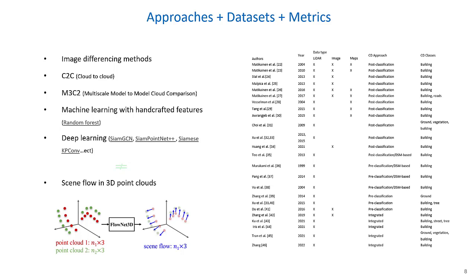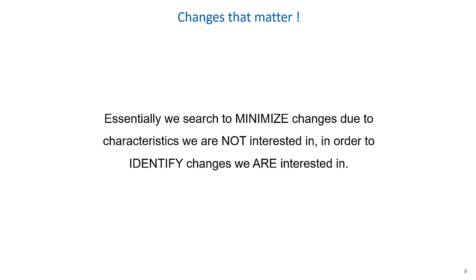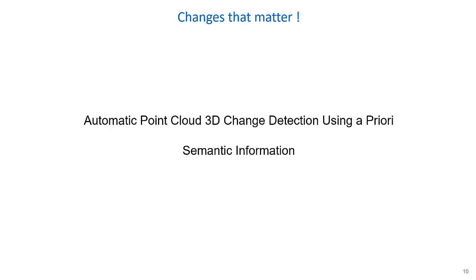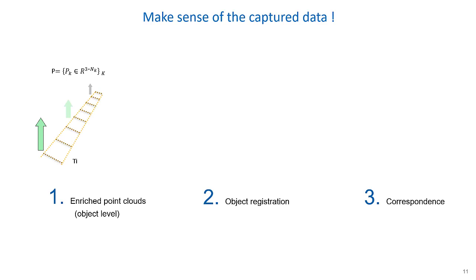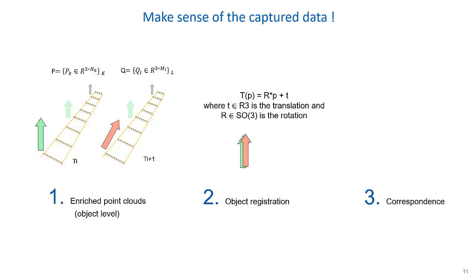A paper is coming in which I make a critical review of existing methods, existing datasets and metrics. In my PhD thesis, the major objective is to detect the change that matters. Essentially, we seek to minimize changes due to characteristics we are not interested in, in order to identify the changes we are interested in, and also by using an approach of estimating uncertainty over the entire process. The second objective is automatic 3D point cloud change detection using prior semantic segmentation. We start by classifying the point cloud at several epochs and comparing the point clouds to each other to obtain the change detection.